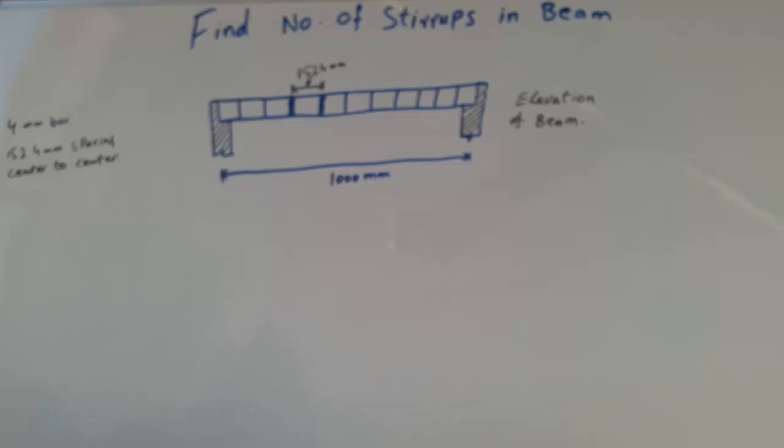Hello and welcome to my YouTube channel. In this video I'm going to explain how to calculate the number of stirrups in a beam. We have a beam 1000 millimeters long, with stirrup bars of 4 millimeter diameter, and spacing center to center between two stirrups of 152.4 millimeters.